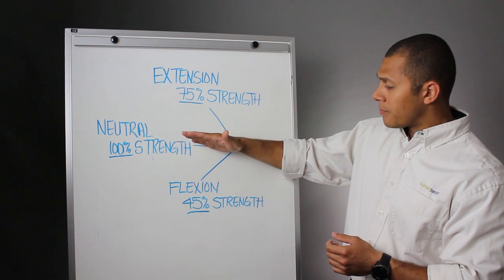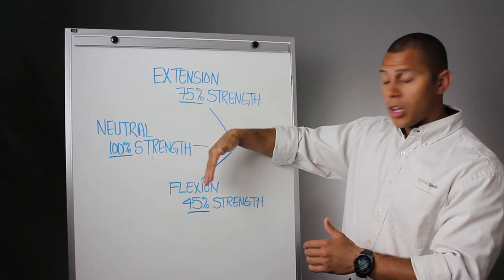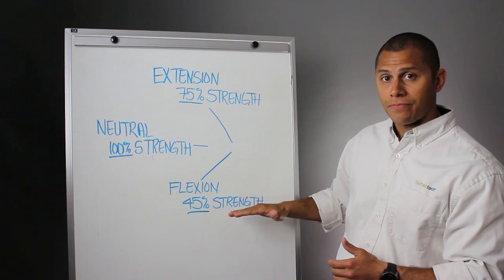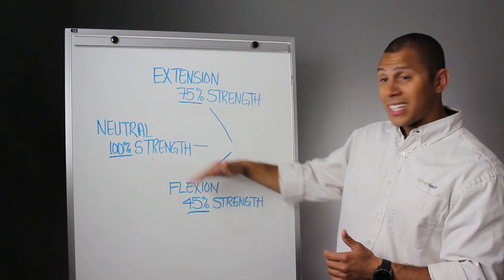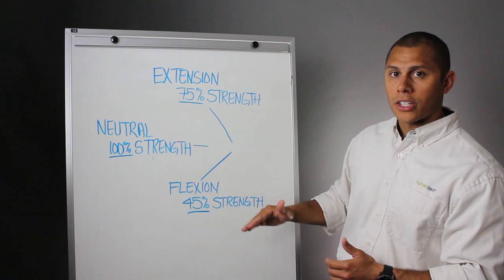Now when our hands and wrists go towards flexion, when our fingers go towards the ground, we can only create 45%. So we're eliminating a significant amount here between neutral postures and flexion.